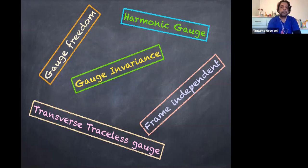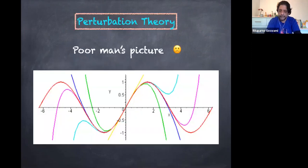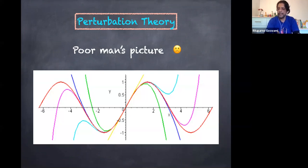That brings us to cosmological perturbation theory. Let me try to give a very basic idea of what exactly cosmological perturbation theory is. Let's start with a poor man's picture. Any perturbation theory is some sort of expansion around a zeroth-order point — we know how a system works exactly at a point in parameter space, and we want to extrapolate around that point.